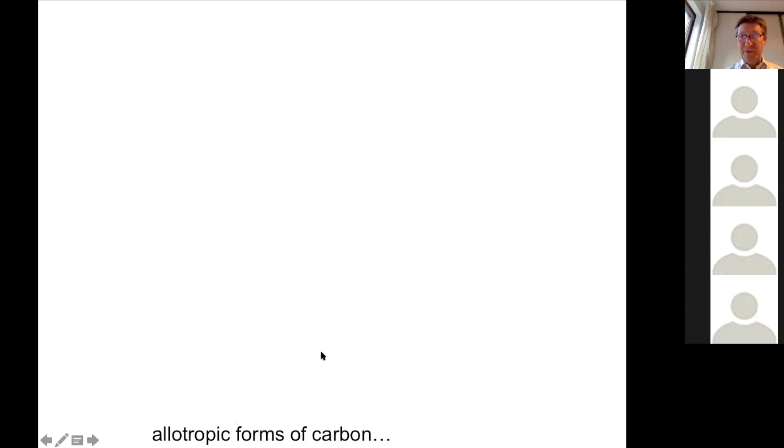Graphene and diamond. Exactly, very good. So the most well-known forms of carbon are diamonds, but also graphite. Graphite, which is like a pencil and the black stuff of the pencil.